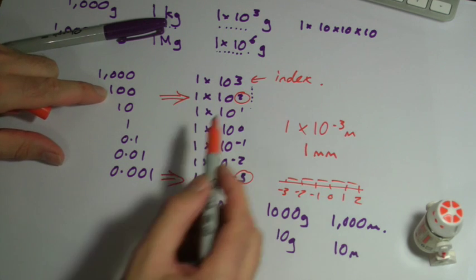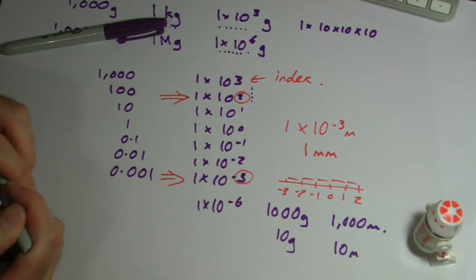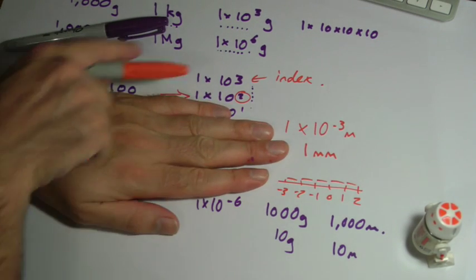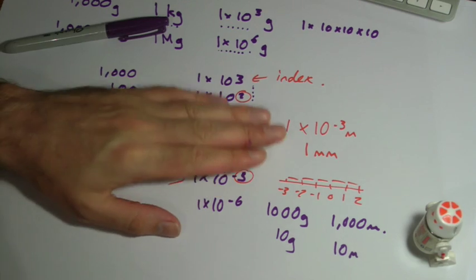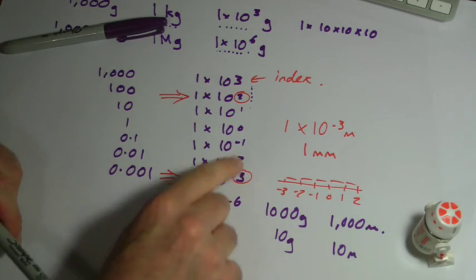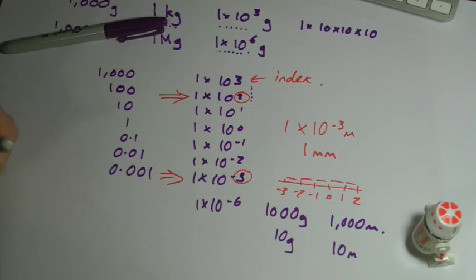Something that's a hundred meters big is five orders of magnitude bigger than something that is one millimeter big. Obviously it's easier if you're working with whole numbers. A thousand is one order of magnitude bigger than a hundred. But it still works. It's pretty straightforward. Just look at the index at the end and see what the difference is in the numbers. And that's how you would calculate or express orders of magnitude.